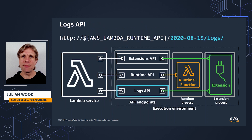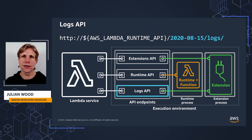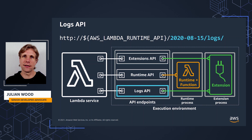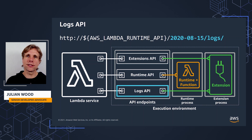Lambda automatically captures runtime logs and streams them to Amazon CloudWatch. This log stream contains the logs that your function code and extensions generate, and also the platform logs that Lambda generates as part of the function invocation. Lambda extensions can use the Lambda Runtime Logs API to subscribe to log streams directly from within the Lambda execution environment. Lambda streams the logs to the extension, and the extension can then process, filter, and send the logs to any preferred destination.